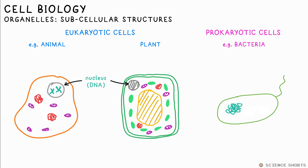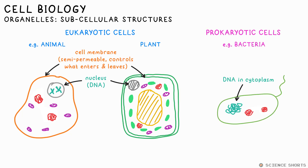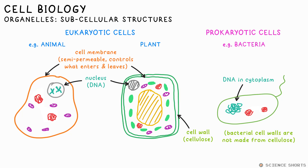Prokaryotic cells don't have a nucleus. The cell membrane keeps everything inside the cell, but they're also semi, partially, or selectively permeable, which means they allow certain substances to pass through. Plant cells have an extra cell wall made of cellulose, providing a rigid structure for them.